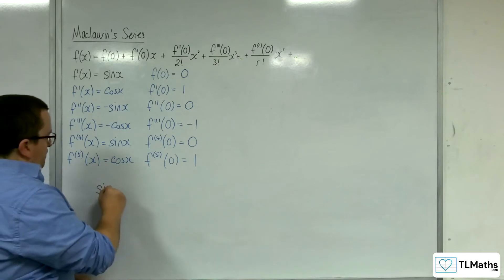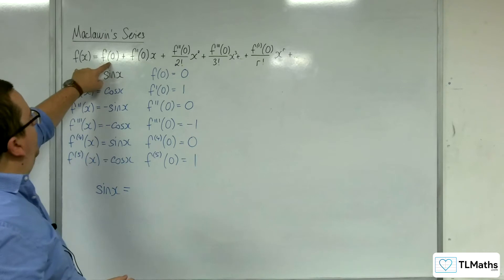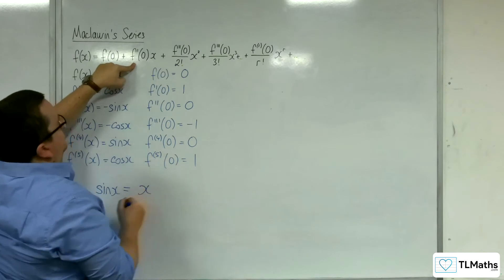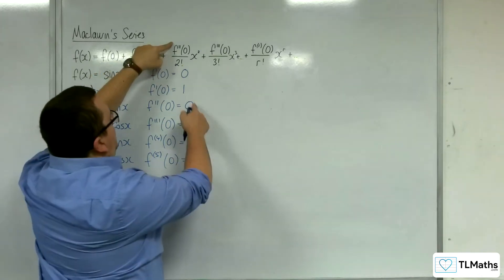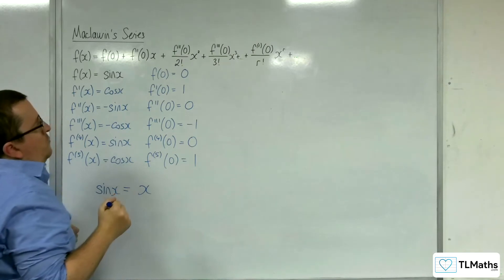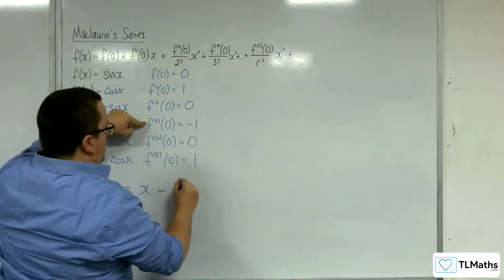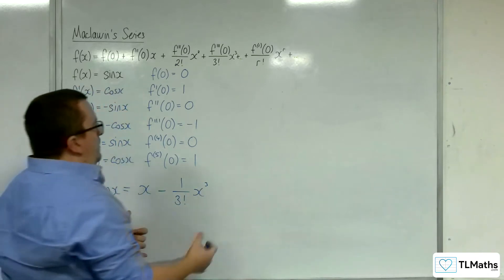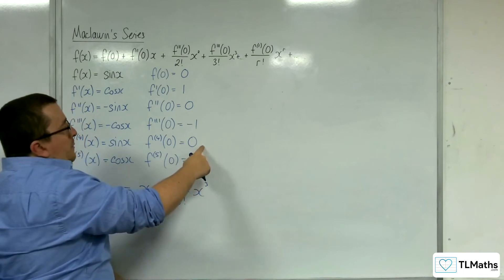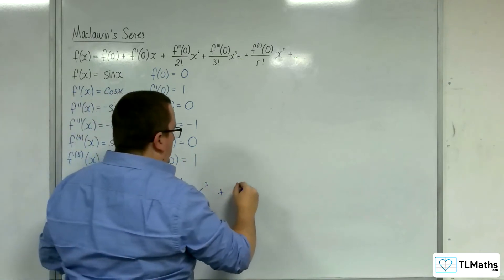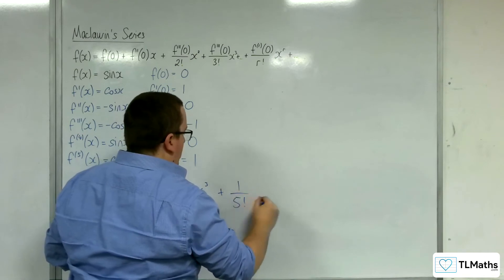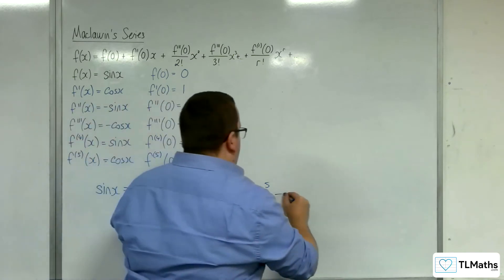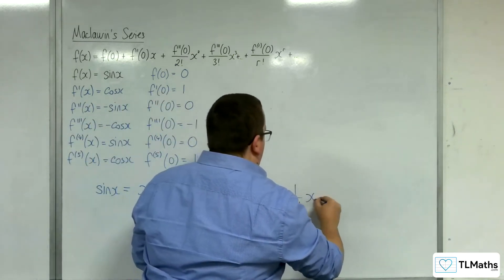So, sine x is going to be equal to, so we've got f of zero, which is just zero. So f prime of zero times x, so one lot of x. F double prime of zero is zero. F triple prime of zero is minus one. So we have minus one over three factorial x cubed. Then the fourth derivative is zero, so the next term will be zero. The fifth term is one, so we'll have plus one over five factorial x to the five. The next one will be zero. Then we would have a negative one over seven factorial x to the seven.